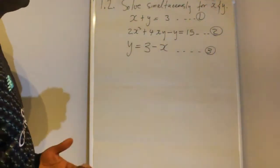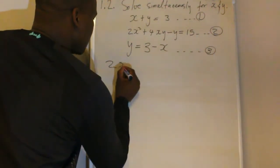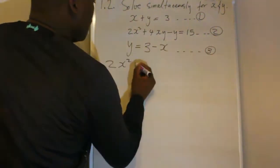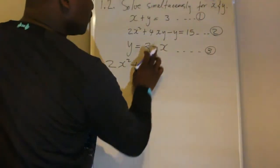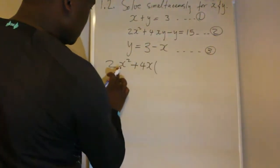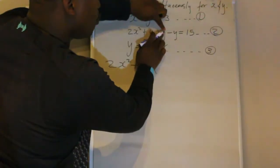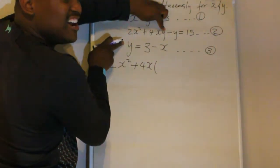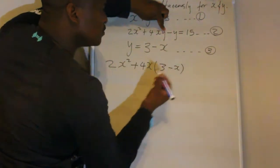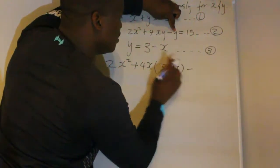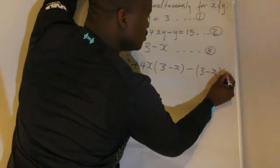To do this, you take your 2x squared down as it is — 2x squared — plus 4x times y. For y, you don't put y as it is; you substitute y with the third equation: y equals 3 minus x. Then minus y again — your y is 3 minus x — which is equal to 15.